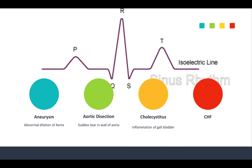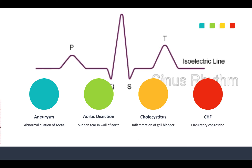There are also things like an aneurysm — that's the abnormal dilation of the aorta — and an aortic dissection, which could be a sudden tear in the wall of the aorta, often caused by trauma. Then we have cholecystitis, where a patient has pain due to inflammation of their gallbladder. Sometimes abdominal situations can cause chest pain as well. And CHF patients, with that circulatory congestion due to inadequate blood flow, could be experiencing chest pain too. That's why it's important to do a 12-lead on CHF patients to make sure they're not also having an MI.